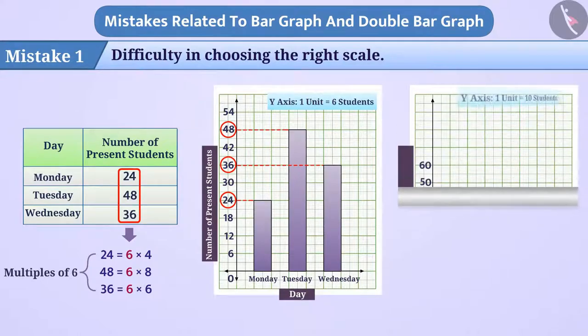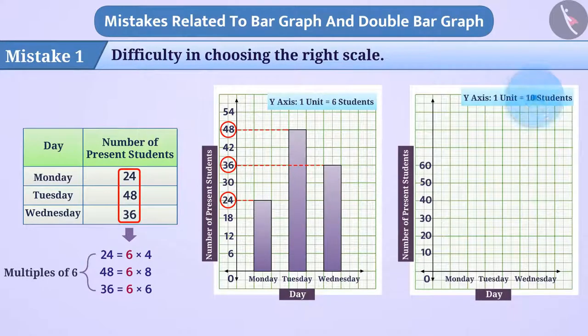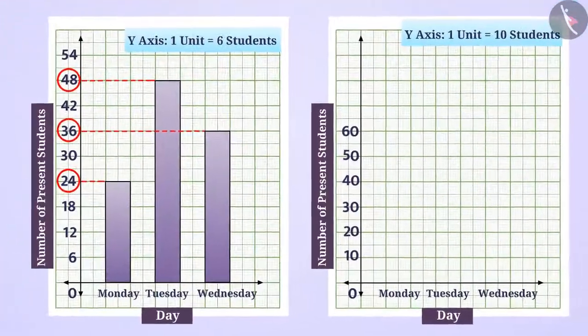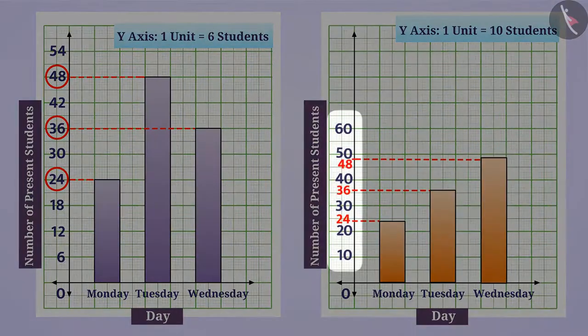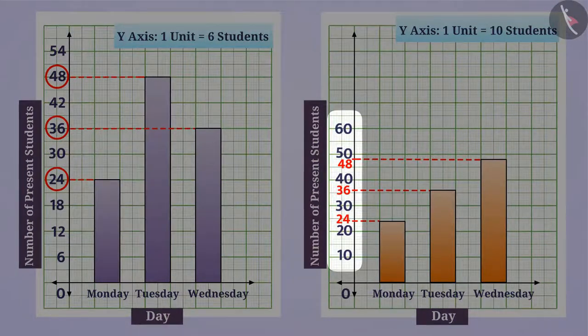If we take the value of the unit as 10, then it will be difficult to represent the numbers shown. It will also increase the chances of mistakes.